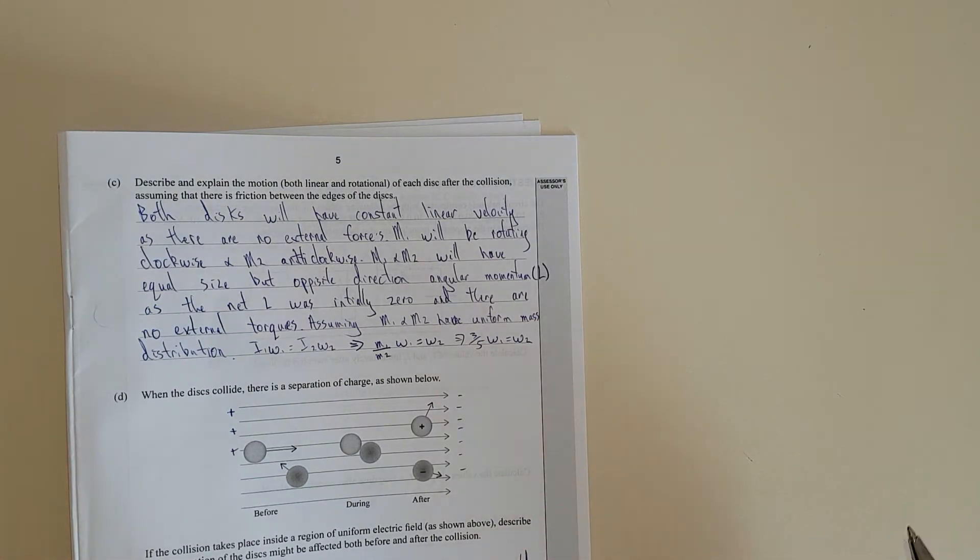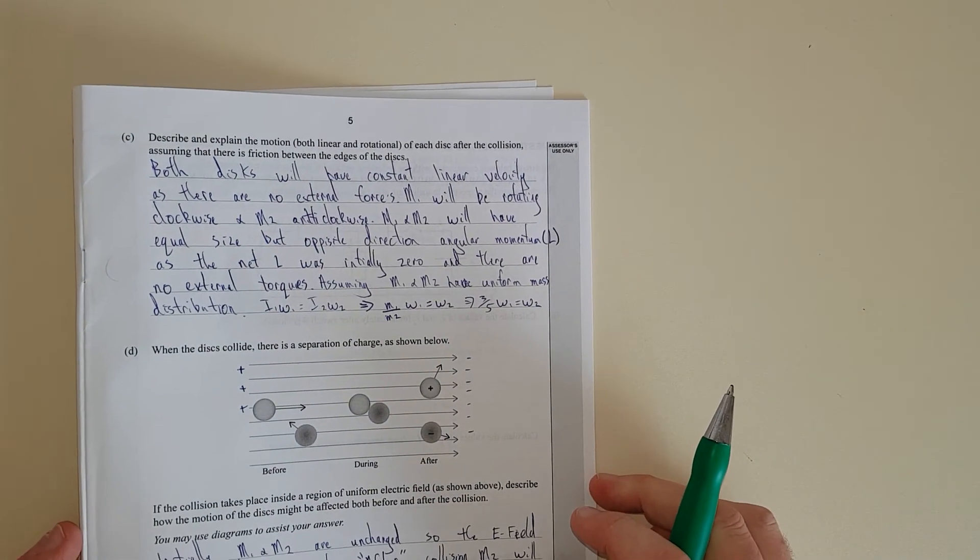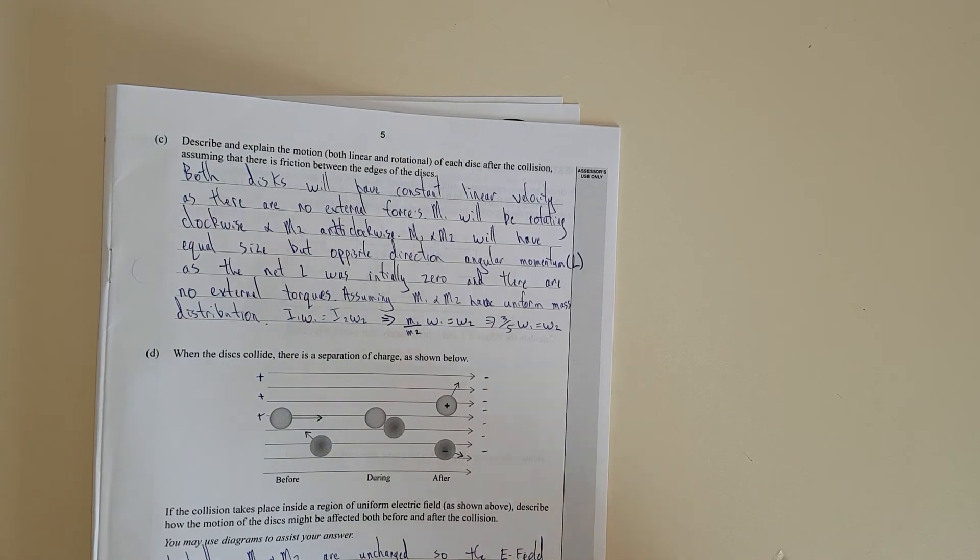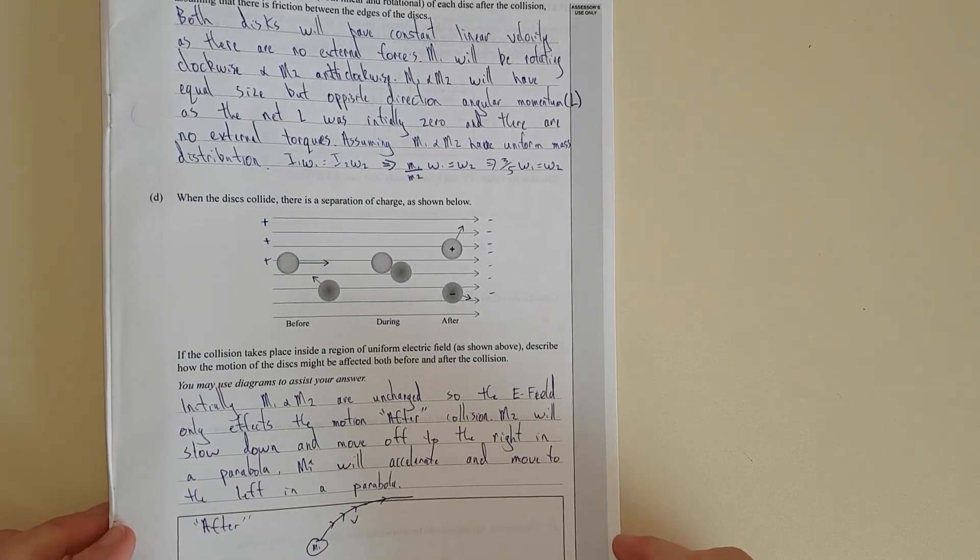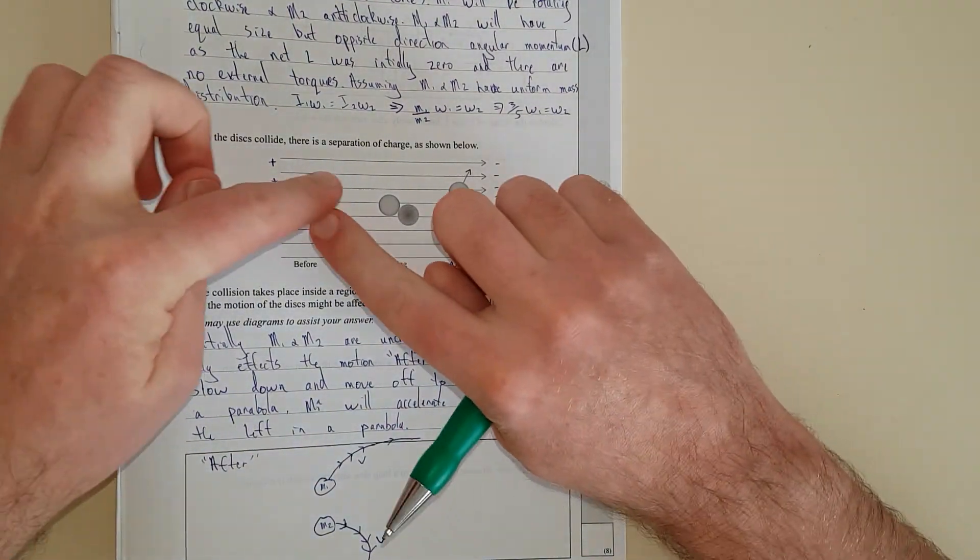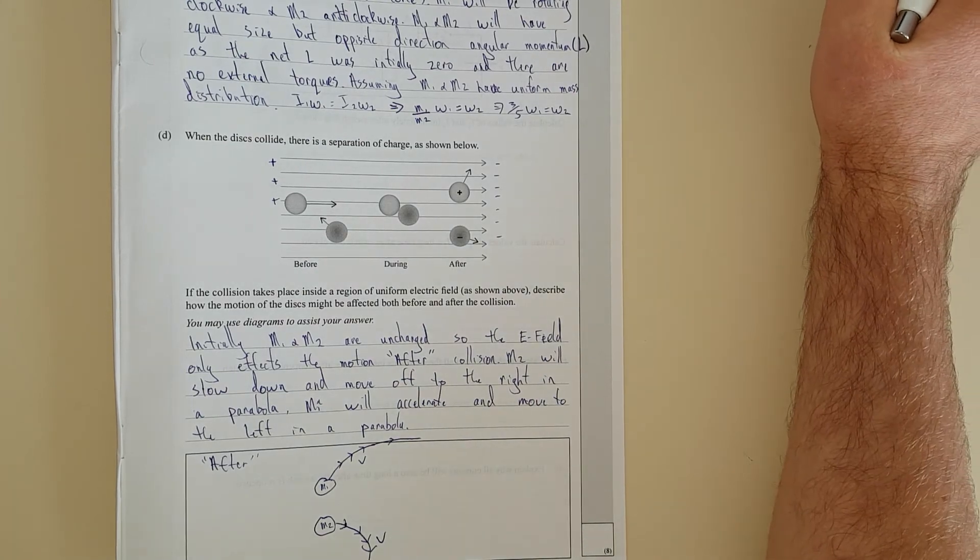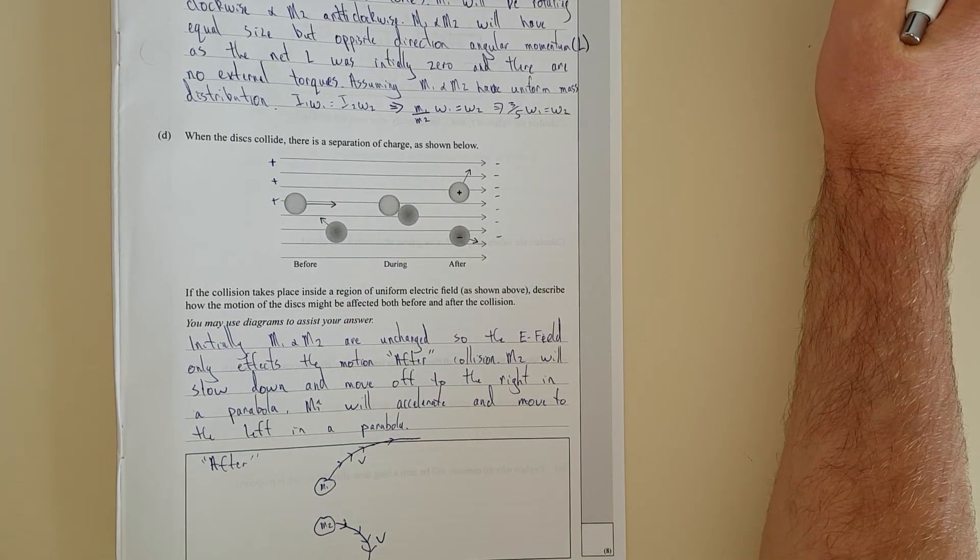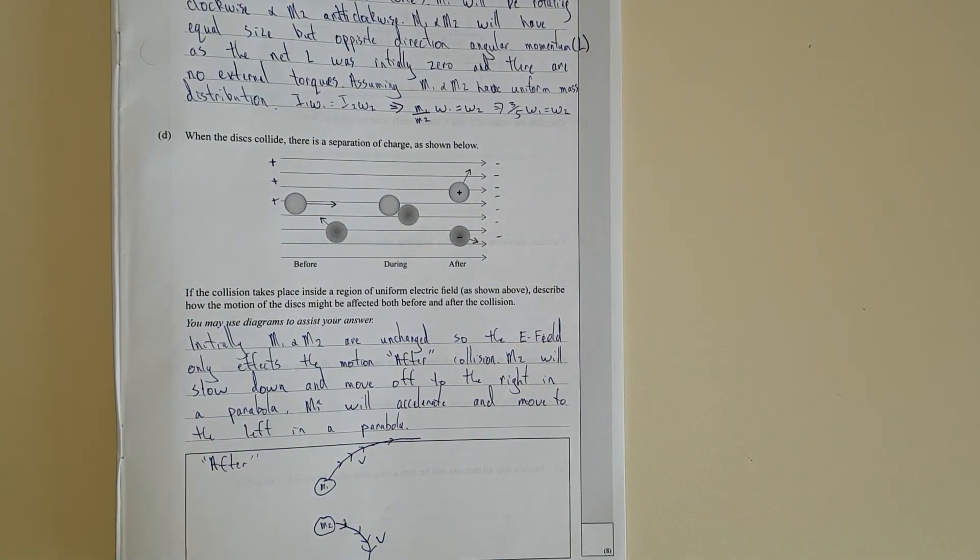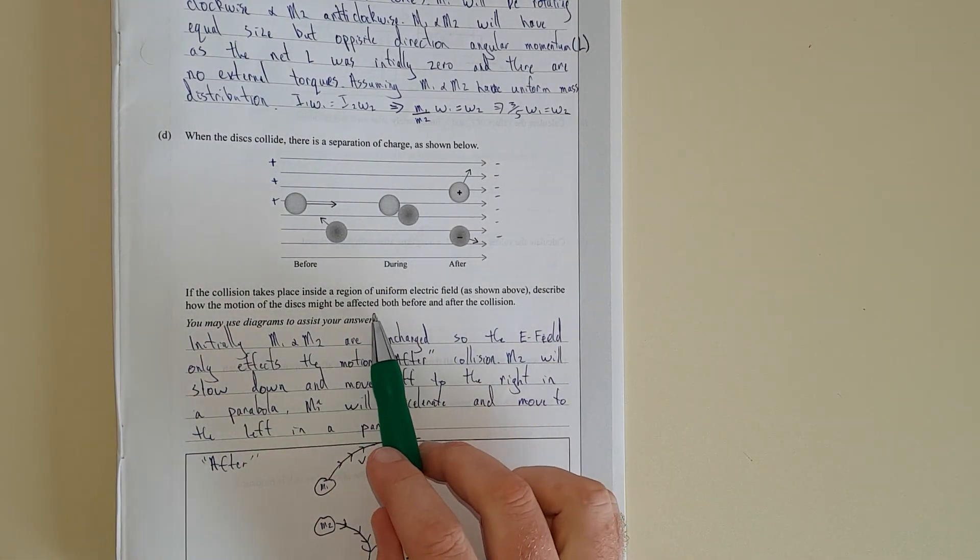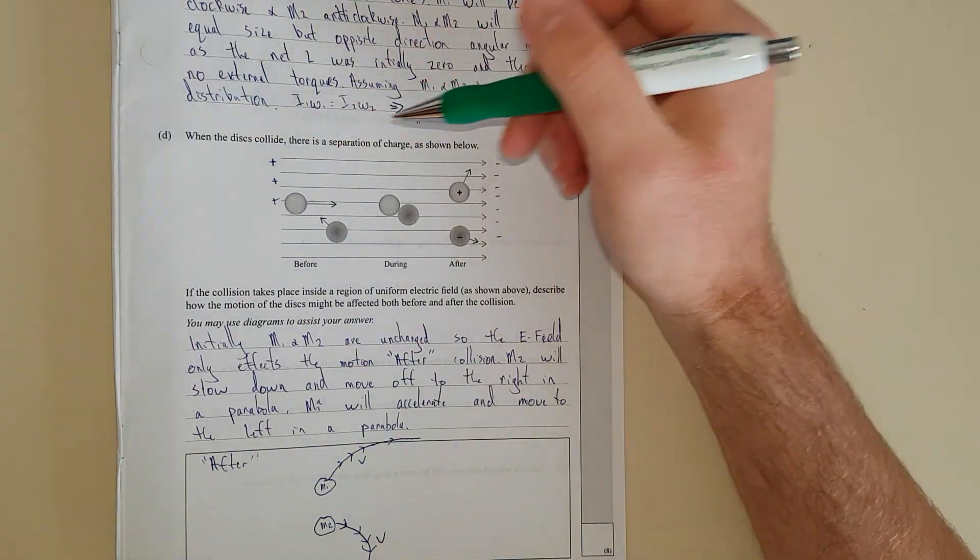Next question: when the discs collide there's a separation of charge as shown below. I've already written the answer for all of it just because I'm saving myself some time. If the collision takes place inside a region of a uniform electric field as shown above, describe how the motion of the discs might be affected before and after the collision. We have the discs inside an electric field, and electric fields are just like gravitational fields. This is like a level 2 concept: electric field lines go from positive to negative, so this must be the negative side, this must be the positive side.